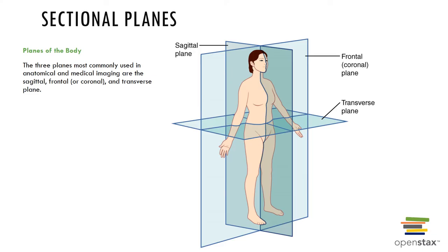Sectional planes divide the body for reference. A sagittal plane is a vertical plane dividing the body into right and left parts; a mid-sagittal plane divides the body exactly in the midline, while a parasagittal plane is offset from the midline. A frontal or coronal plane divides the body into anterior and posterior portions. A transverse or horizontal plane divides the body into superior and inferior portions. An oblique plane is a diagonal cut between a horizontal and a vertical plane.